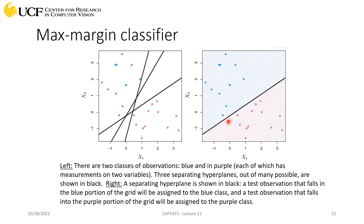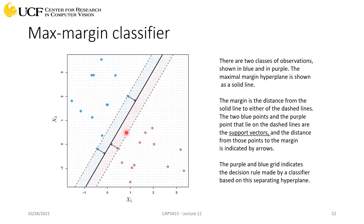The support vector classifier allows some points to cross the margin — we discount outliers by allowing a certain number of points to violate the margin. This is a soft margin approach. For example, if we allow a discount of two points and ignore one outlier, the margin shifts to the next closest point and the decision boundary moves accordingly, making the classifier more robust to noisy training data.